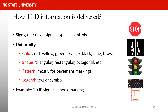Shape also matters — each shape means something specific. For example, a yield sign is always a triangle, so we know that shape is used only for certain messages. Pattern is mostly for pavement marking — for example, double lines mean you cannot pass. And legend is the text on a sign or symbol, such as writing 'STOP' on a stop sign. We want the legend to be uniform as well.